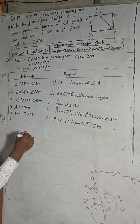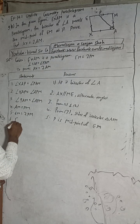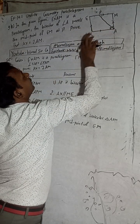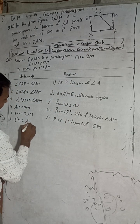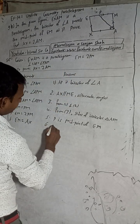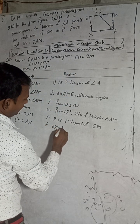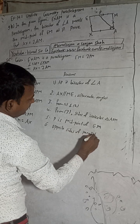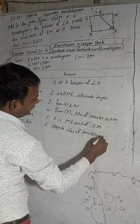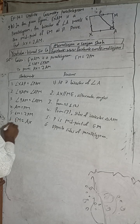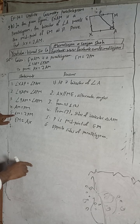Now, EM equals AX — reason: opposite sides of a parallelogram are equal.